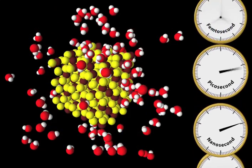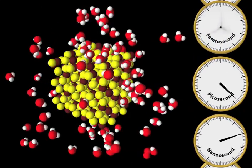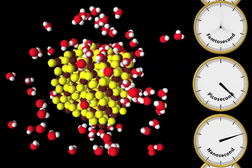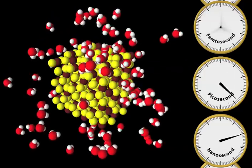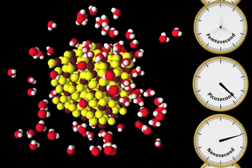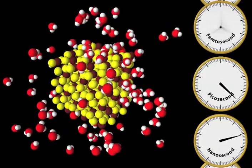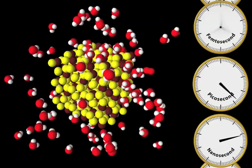If we slow things down another thousand times, we see the motion of water molecules around the pyrite. This motion, which happens over picoseconds, provides a constant supply of water molecules to attack the pyrite. Without this motion, the pyrite would stop dissolving.